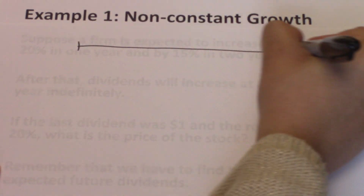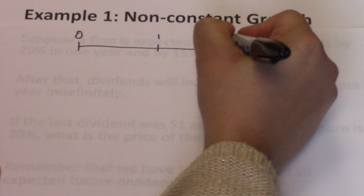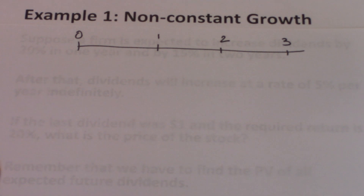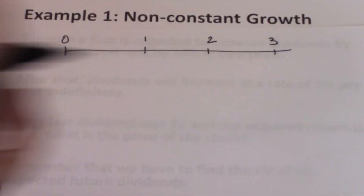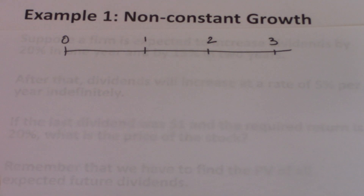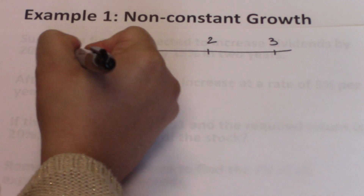Here we have a timeline with time 0, the end of year 1, the end of year 2, and year 3. The problem says that the last dividend was $1 — that is your D0. Be very careful: if you hear 'the last dividend was' or 'the company just paid a dividend of,' that is your D0. So D0 here equals $1.